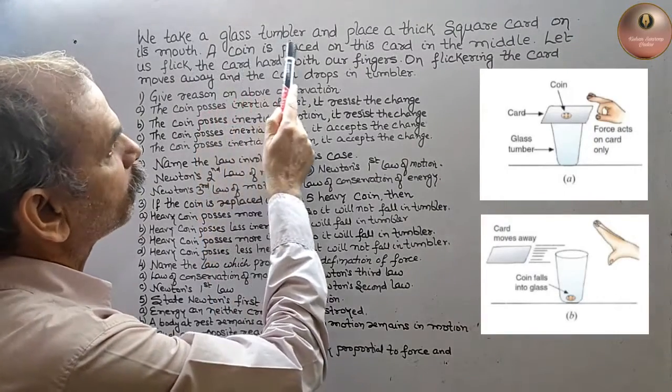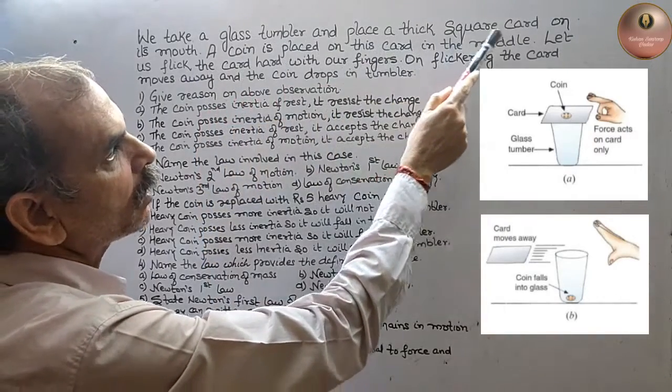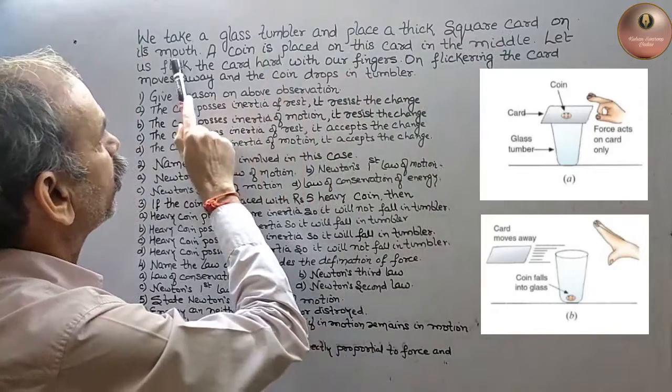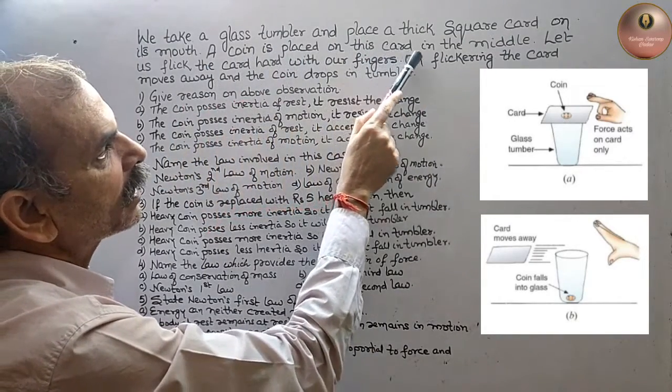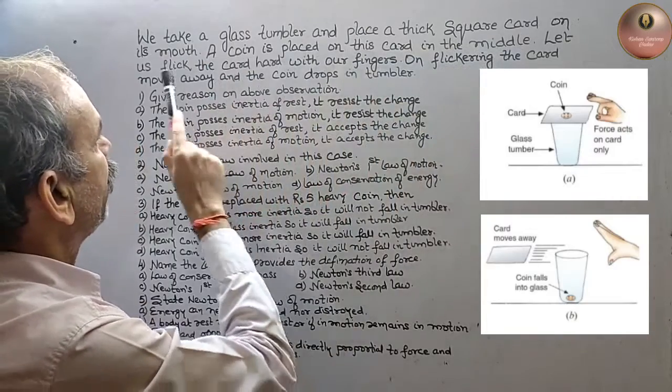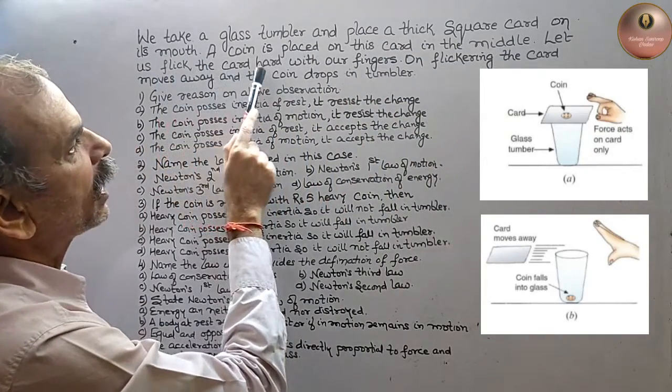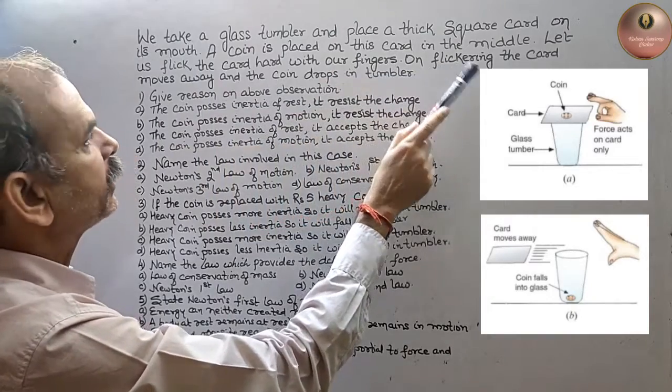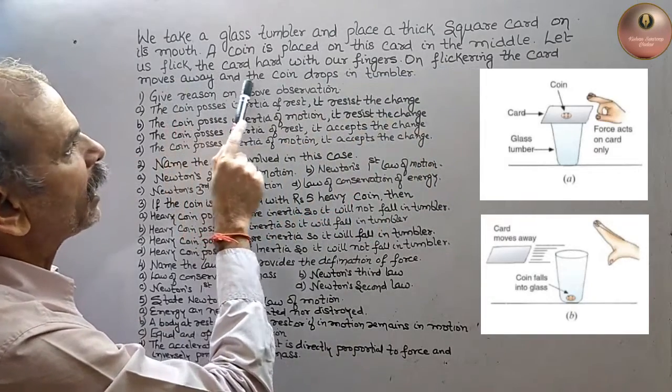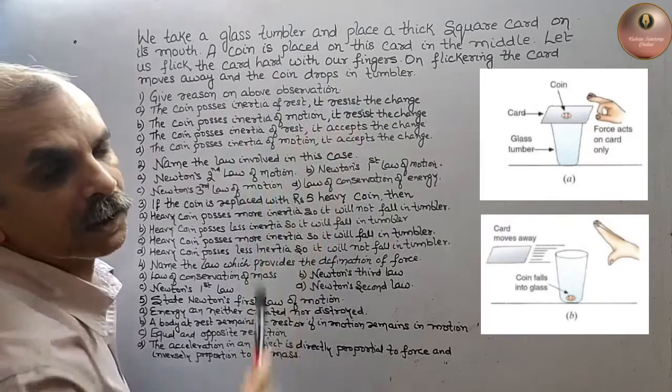We take a glass tumbler and place a thick square card on its mouth. A coin is placed on this card in the middle. Let us flick the card hard with our fingers. On flickering, the card moves away and the coin drops in the tumbler.